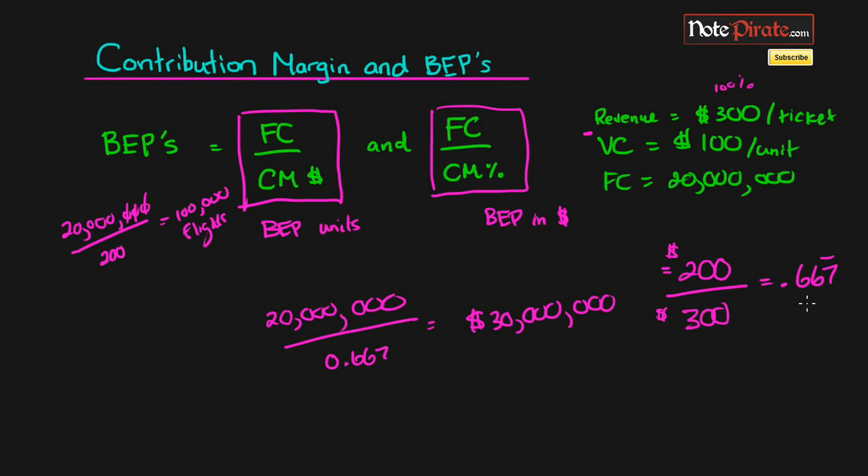So now we have it, we have our breakeven point in units and our breakeven point in dollars. And now you understand how we actually determined these equations and how to get the contribution margin ratio.